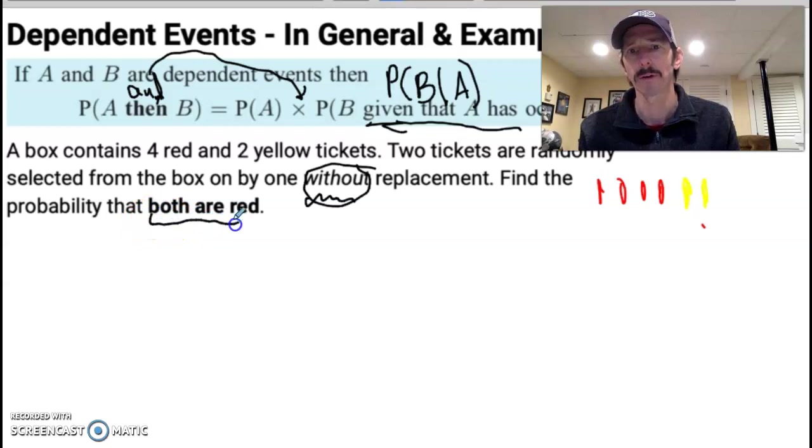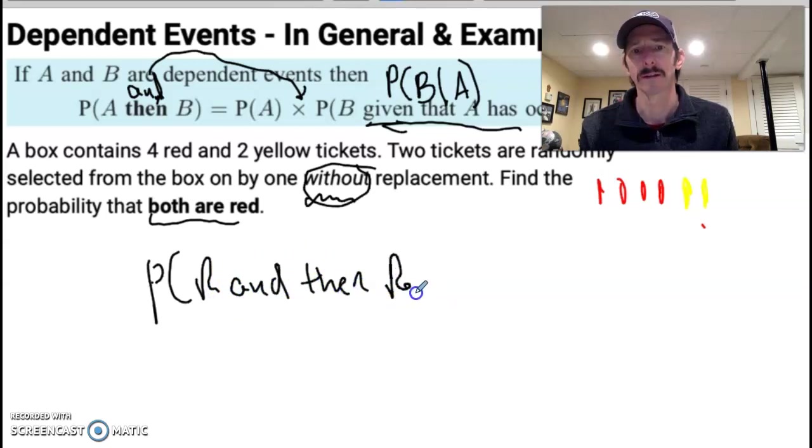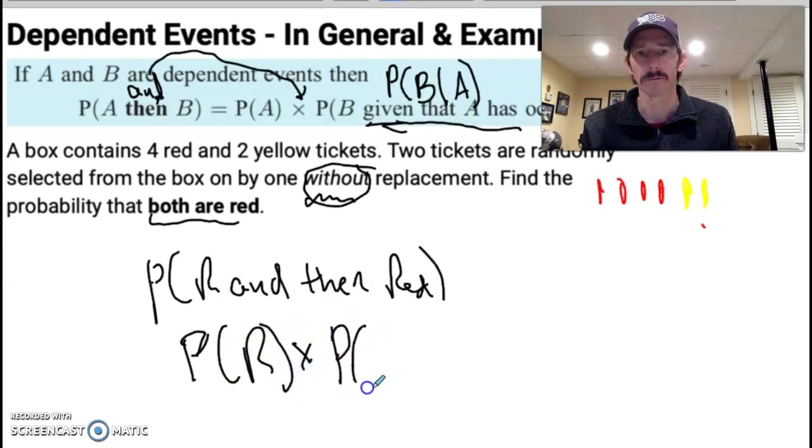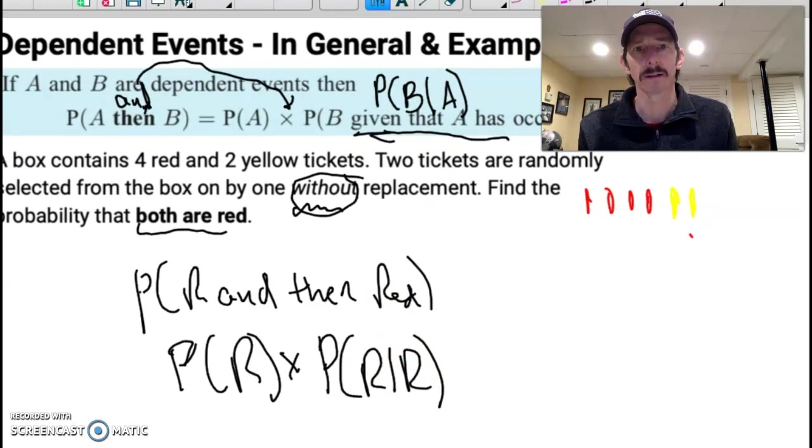So if I want the probability that both are red, I want the probability of red and then red. So I can figure this out, the probability of red, times the probability of red, given that I already chose a red one. And again, this notation is going to come in later. I kind of like to think about these just in terms of, we'll do the first event, which is the probability that it's red.